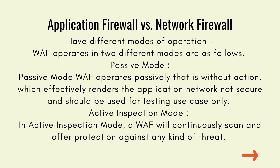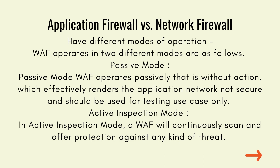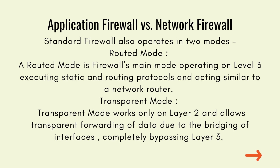Application firewalls and network firewalls have different modes of operation. A WAF operates in two modes: passive mode, where it operates without taking action — effectively leaving the application unsecured, suitable for testing only — and active inspection mode, where the WAF continuously scans and offers protection against any kind of threat. A standard firewall also operates in two modes: routed mode, which is the firewall's main mode operating at layer 3, executing static and routing protocols and acting similar to a network router.